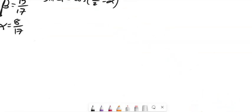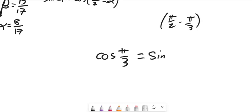Right, so if I know what cosine of π/3 is, that's going to be the same as sine of—what? Let's see, π/2 minus π/3. I'm subtracting fractions, let me make a common denominator, which would be 6, right? So I'm going to multiply this one by 3/3, this one by 2/2, so I've got 3π/6 minus 2π/6, which is π/6.